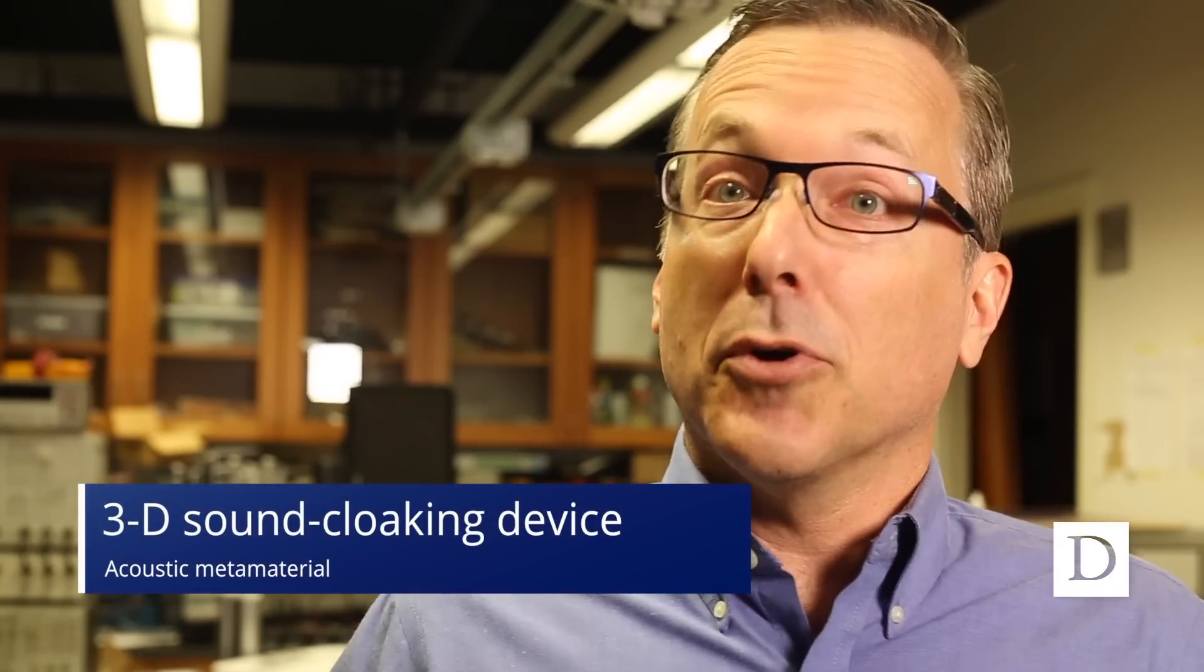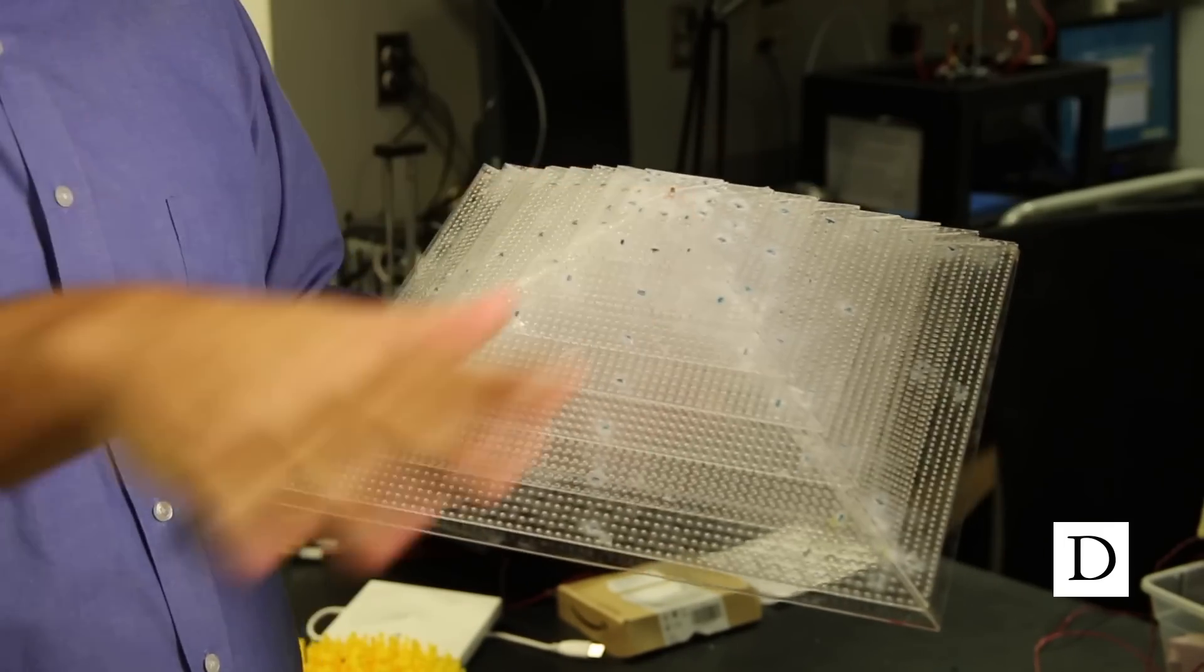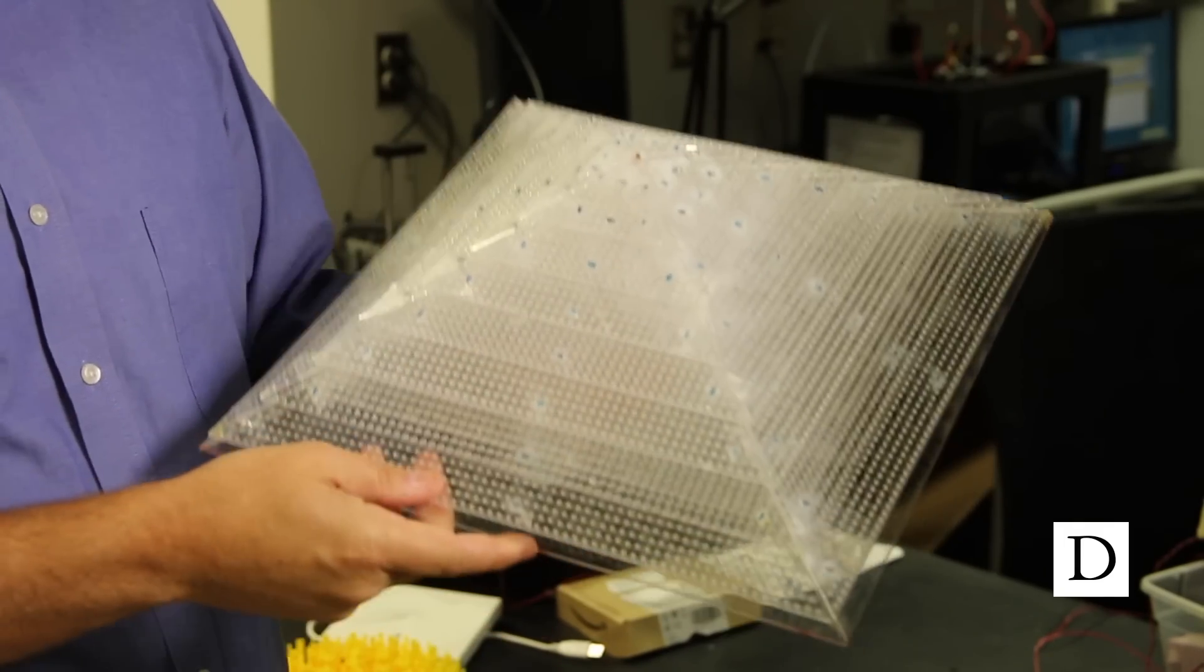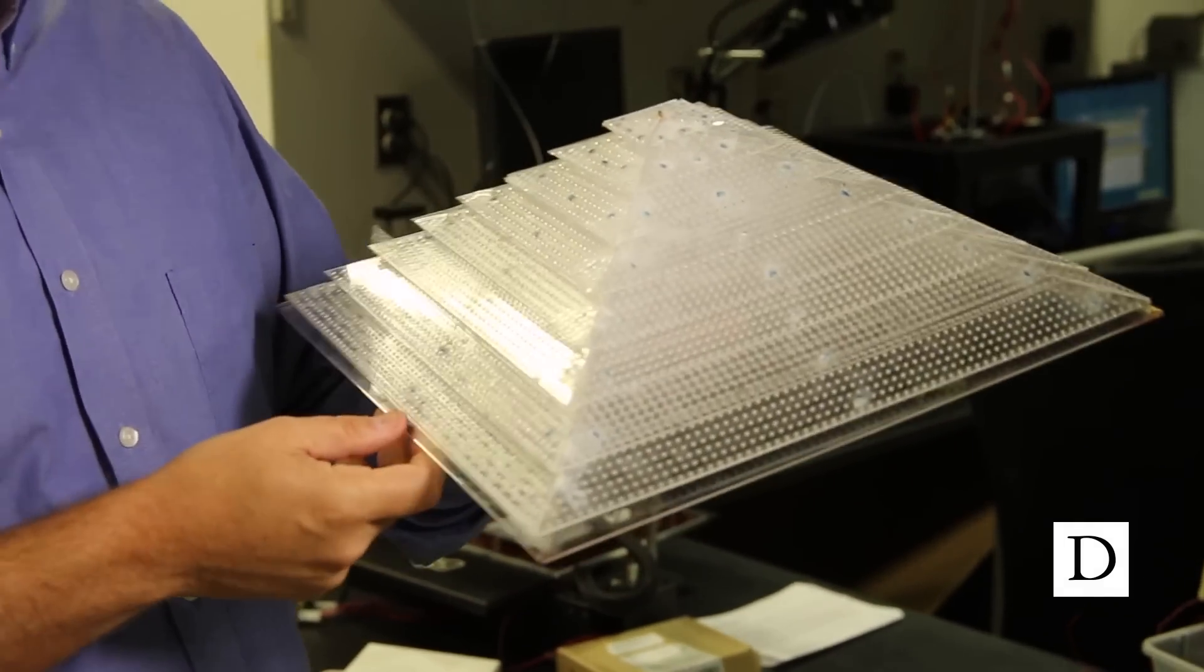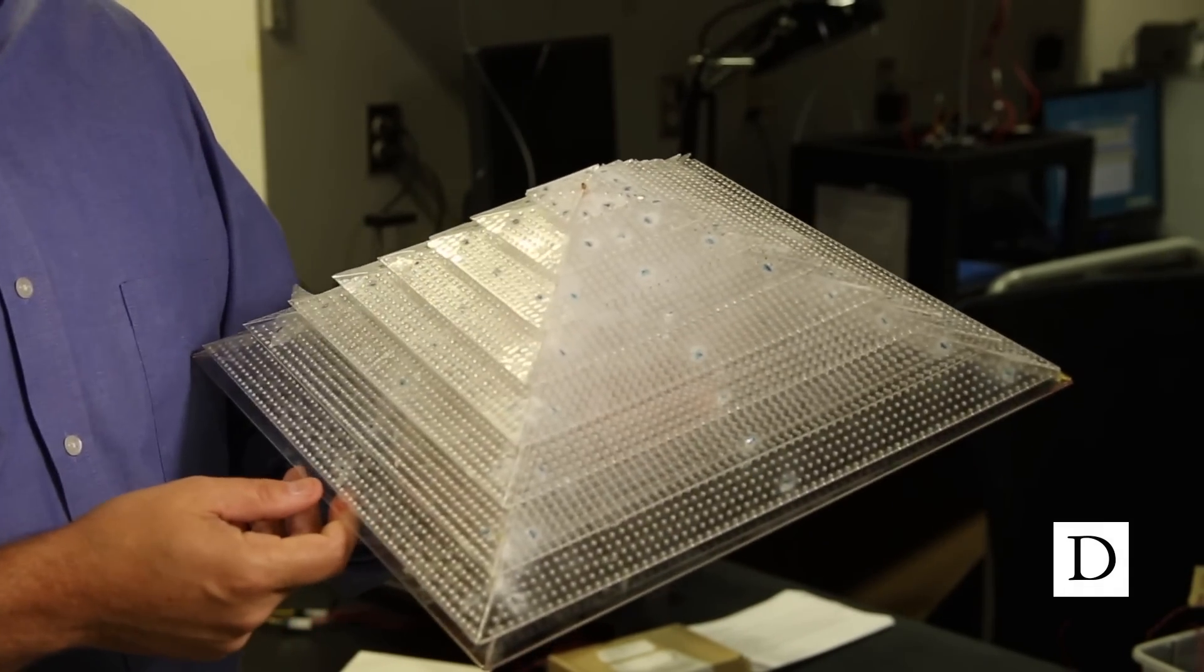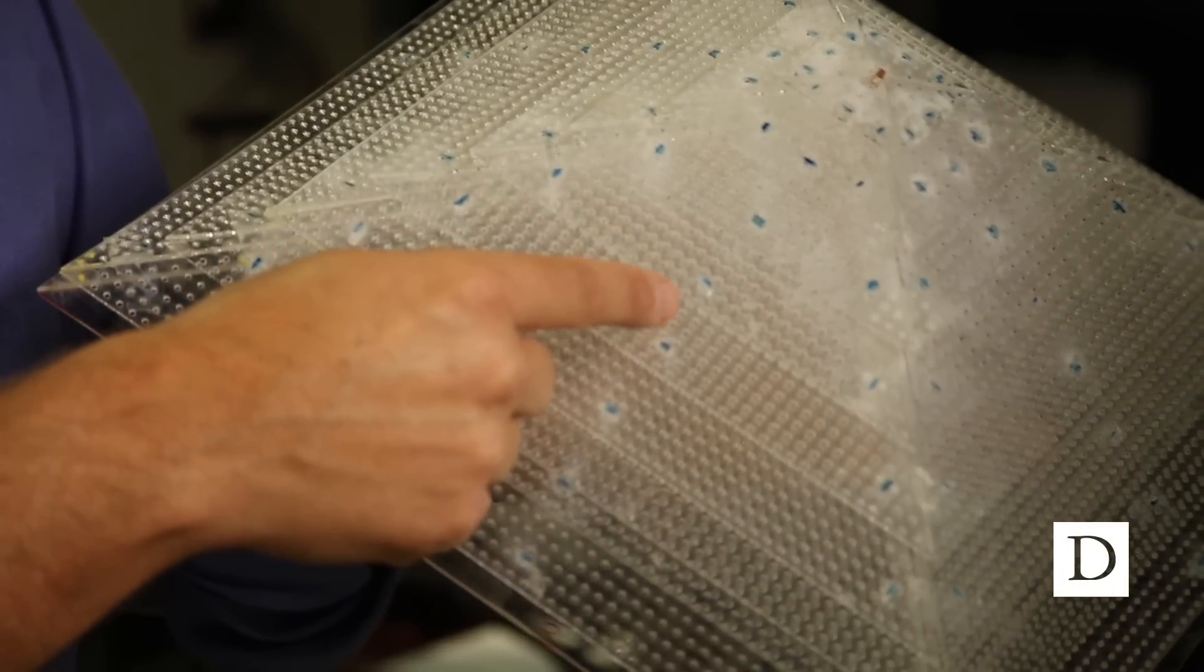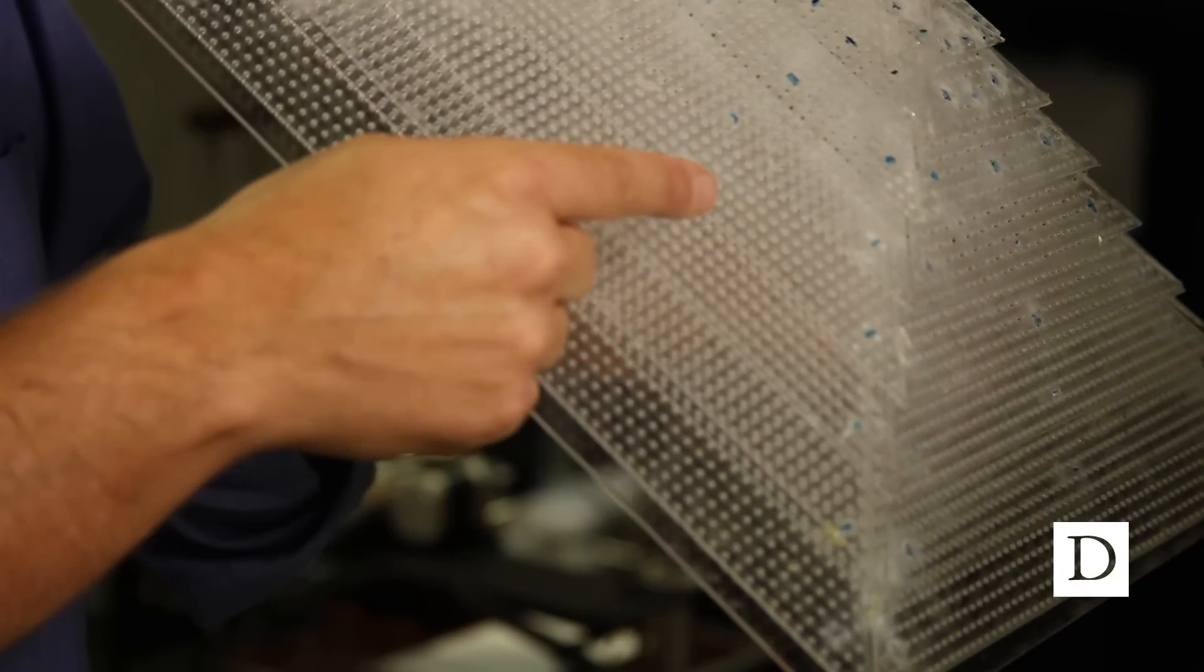Our first 3D proof of concept with acoustic metamaterials was a three-dimensional sound cloaking device. This is a material that could be put over an object on a sound reflecting surface. And when the reflecting object is covered by this cloaking shell, you can't detect the object by incident sound waves and reflection like through sonar.